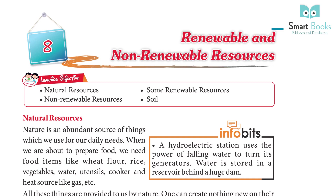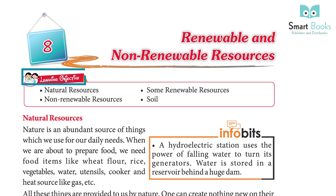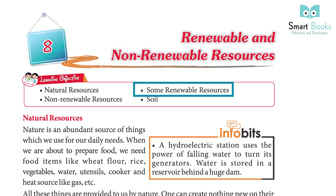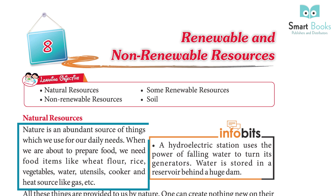Chapter 8: Renewable and Non-Renewable Resources. Nature is an abundant source of things which we use for our daily needs. When we are about to prepare food, we need food items like wheat flour, rice, vegetables, water, utensils, cooker, and heat source like gas etc.